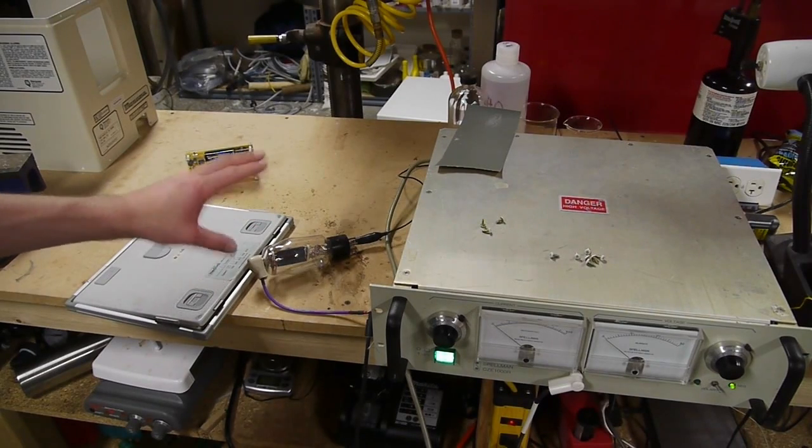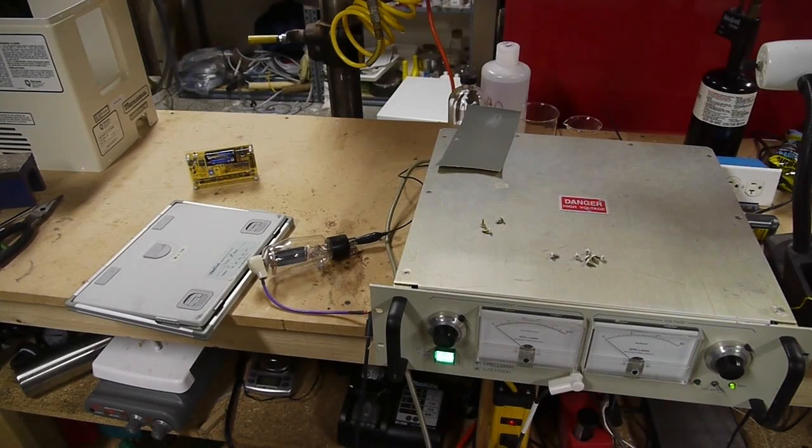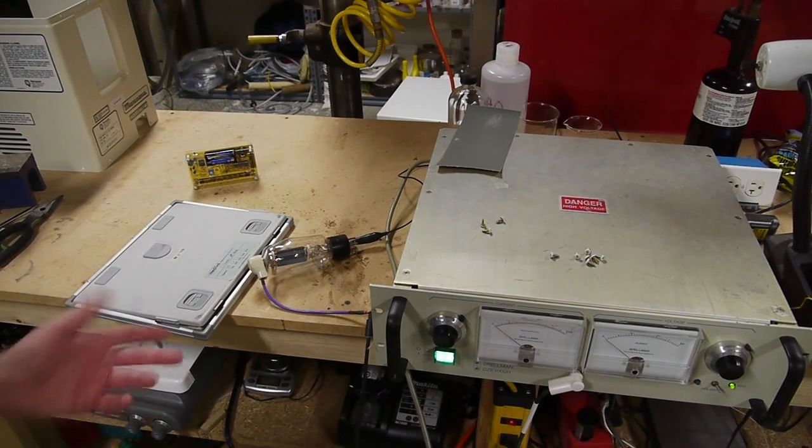So in cold cathode mode we can get the voltage really high and inside here some of the electrons will get going really quickly and we'll get some X-rays out of it.